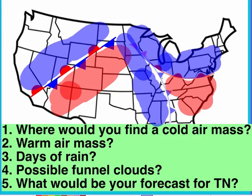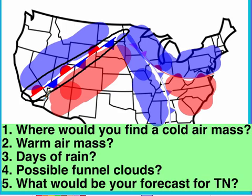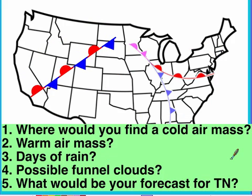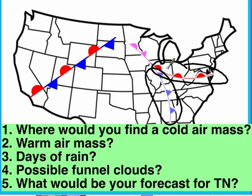Now let's identify the type of precipitation at each front. At the stationary front, Ms. Brown notes that since the front doesn't move, you'll have several days of rainy weather. At the cold front, Mr. Gornto says you'll probably get thunderstorms and rain. At the warm front, expect drizzly rain — not as intense as a cold front. And the occluded front would bring a pretty high amount of rain as well.